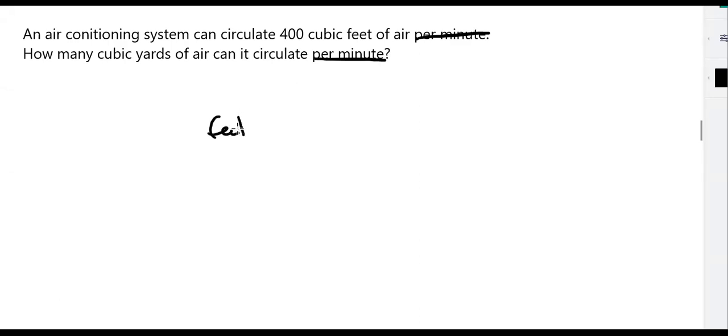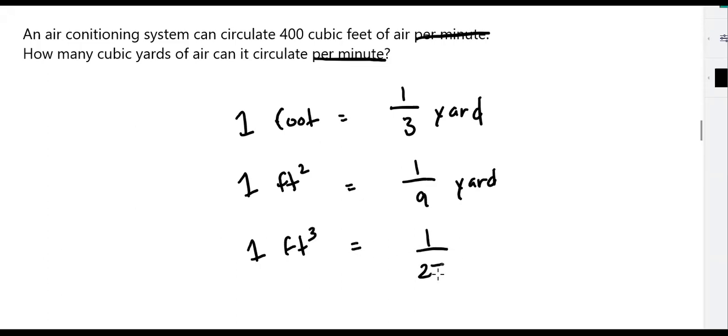Let's just start with basics here. One foot is the same as one-third of a yard because there are three feet per yard. Okay, so that means one square foot is going to be one-ninth of a yard, because three squared is nine. Okay, we're getting there. Next up would be cubic feet. One cubic foot would have to be one twenty-seventh of a yard because three cubed is twenty-seven.